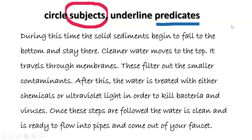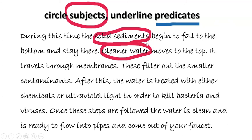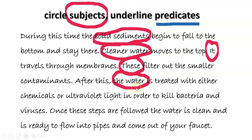Let's look at the first sentence — what is the subject? Good job, we've got 'solid sediments.' Next: 'cleaner water.' And what is the 'it' referring to? That's right, it's referring to cleaner water. Next sentence: 'these' — what is 'these' referring to? Membranes. Next sentence: the water. And the next: the water again. Good job.